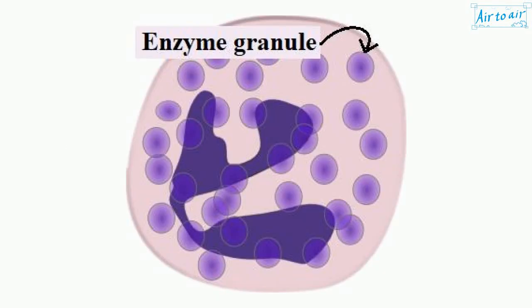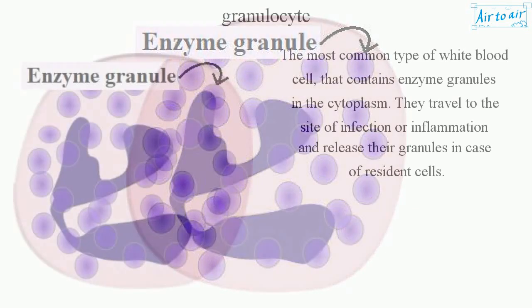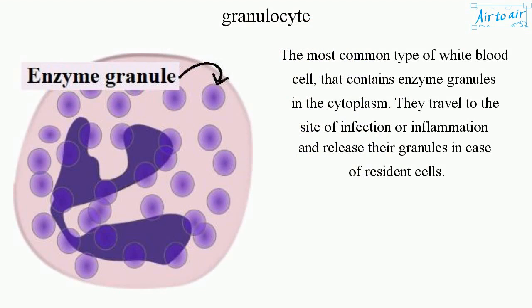Granulocyte: the most common type of white blood cell that contains enzyme granules in the cytoplasm.